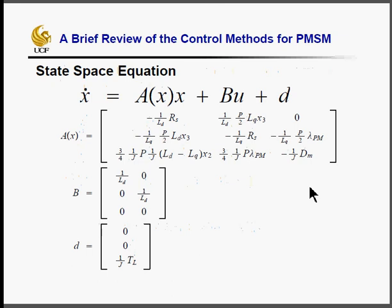U is the control input, and it's defined as d and q axis voltage.